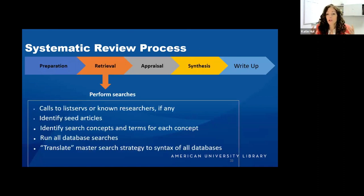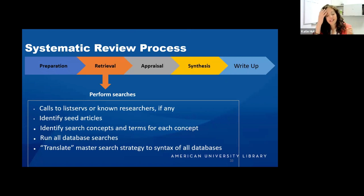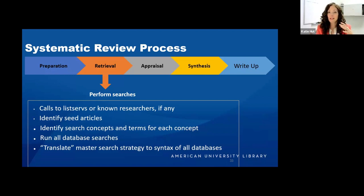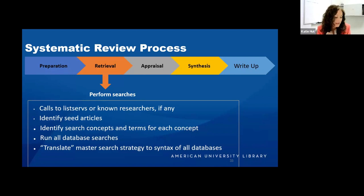Retrieval is when you're actually doing the searching. This step, according to UNC, takes more than 40 hours. Everything in the retrieval process also needs to be documented. One of the first things you may want to do is put a call out to your listserv in your discipline area or to any known researchers about your research.